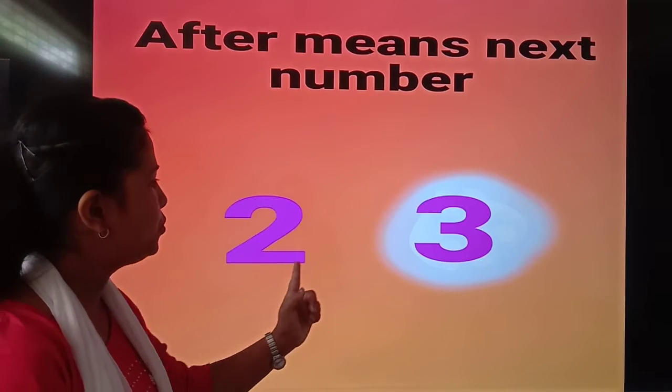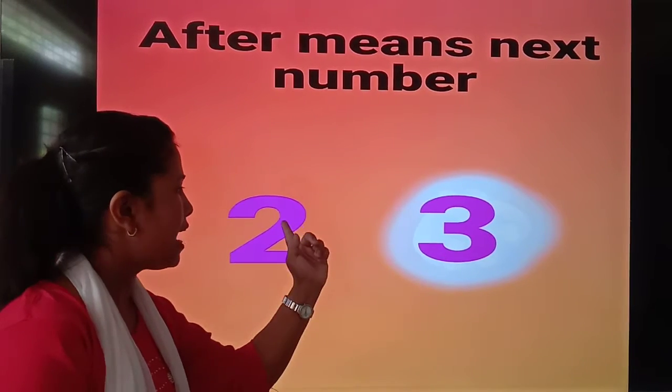For example, 2, 3. Children, 3 comes after 2.